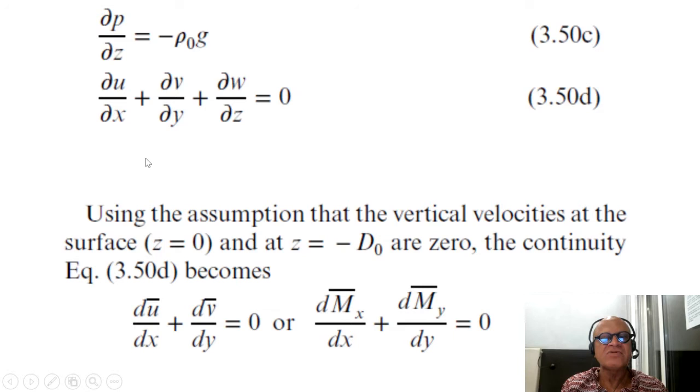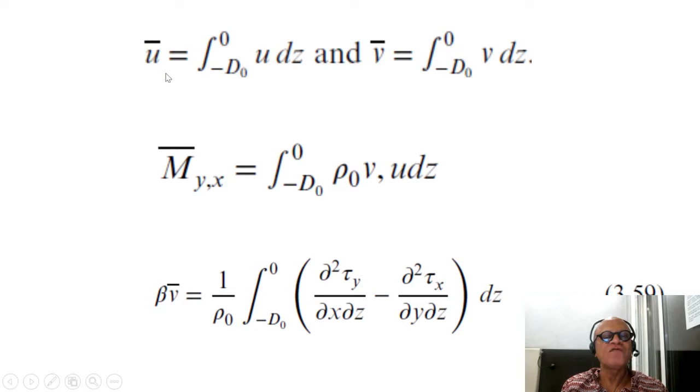Then this continuity equation can be integrated in the vertical to write that as du_bar/dx plus dv_bar/dy equal to zero, or in terms of transport, dM_bar_x/dx plus dM_bar_y/dy equal to zero, where these u_bar and v_bar are essentially the integrations of the zonal currents in the vertical from the level of no motion to the surface, so the w terms disappear when we integrate the continuity equation.